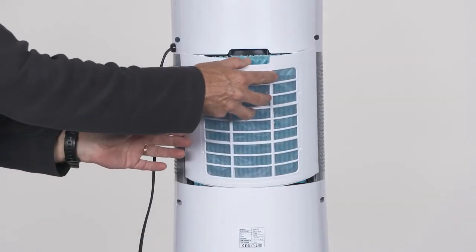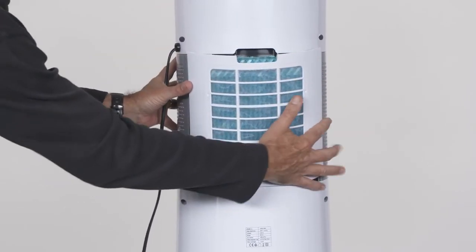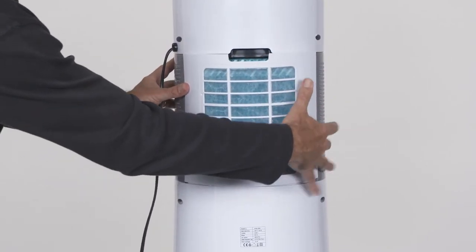Once the sponge is in place, you can fit the rear panel by inserting the bottom and then with light force, push the top into place.